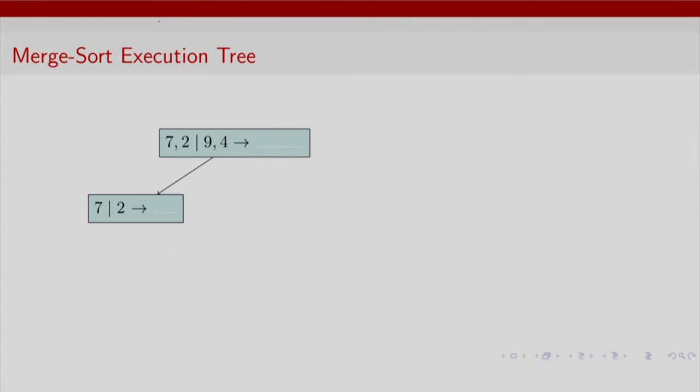Here is an example. We have an array 7, 2, 9, 4. Our first step is to divide. So we have divided into two parts of equal size. We want to determine the sorted list on the right hand side, which is empty as of now, but we will populate as we go down. So the first step is divide.